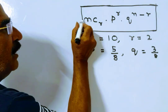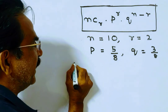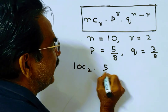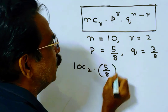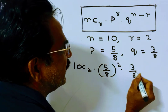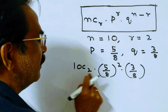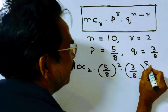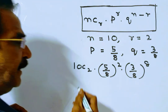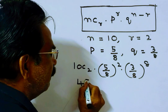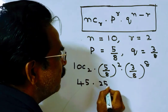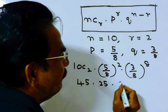Now substituting into the formula: 10C2 × (5/8)^2 × (3/8)^8. We calculate 10C2 as 10 × 9 / 2, which equals 45. Then 45 × 25 (which is 5 squared) × 3 to the power of 8.